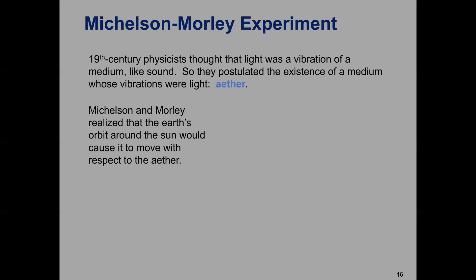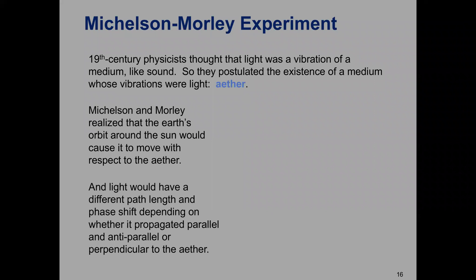Albert Michelson and Morley realized that if this ether existed and we could determine its speed, we should be able to do that by measuring changes in the speed of light — especially changes as the earth orbited the sun. They realized they could do this with an interferometer like the one we discussed yesterday, with two perpendicular arms: one arm aligned parallel to the earth's direction of motion through the ether, and one perpendicular.